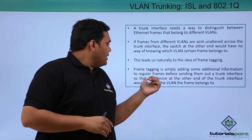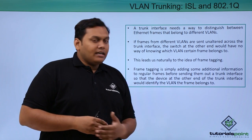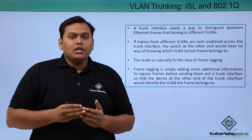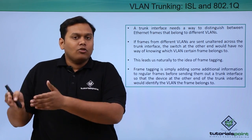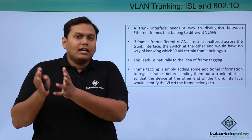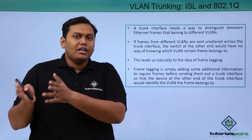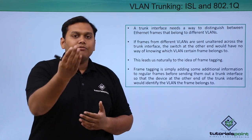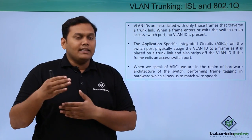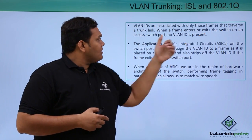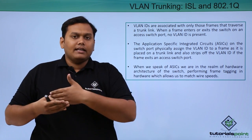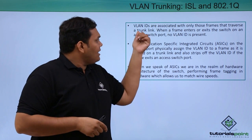The device at the other end of the trunk interface will know and identify which VLAN the frame belongs to, since we have different VLANs configured. VLAN IDs are associated with frames that traverse the trunk link, so the frames traversing the trunk links are associated with these VLAN IDs.